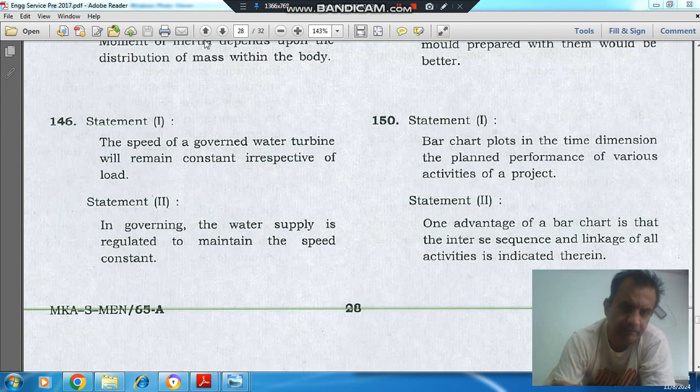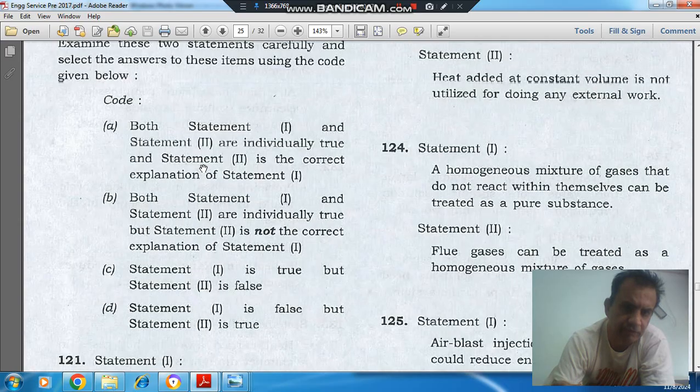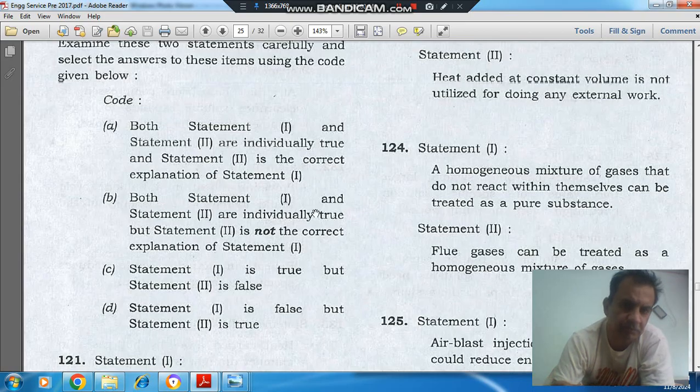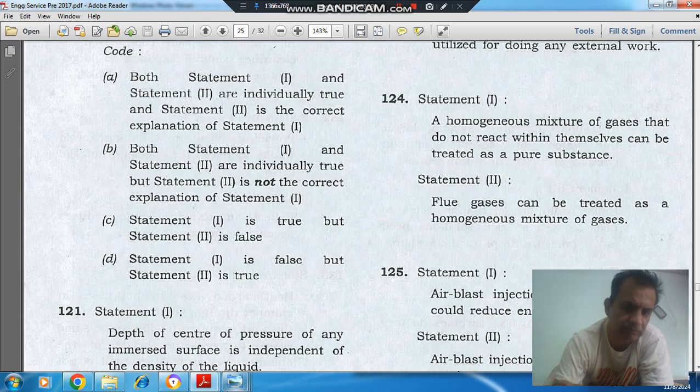Options are: Option A, both statement 1 and statement 2 are individually true and statement 2 is correct explanation of statement 1. Option B, both statement 1 and statement 2 are individually true but statement 2 is not the correct explanation of statement 1. Option C, statement 1 is true but statement 2 is false. Option D, statement 1 is false and statement 2 is true.